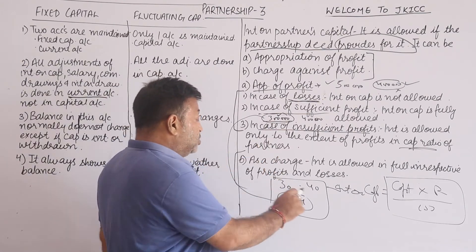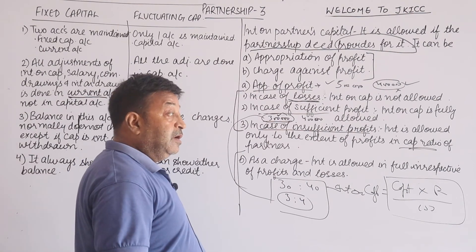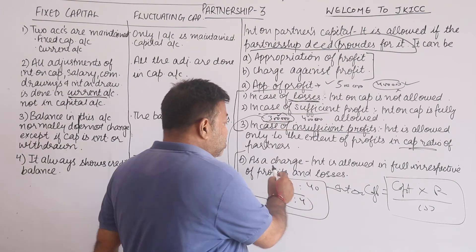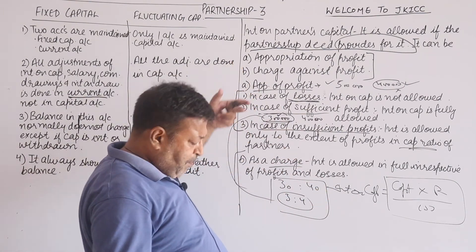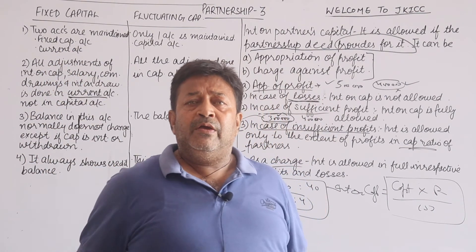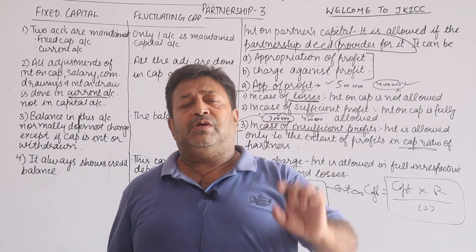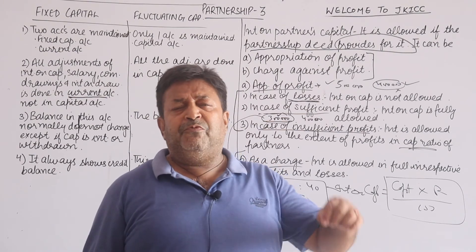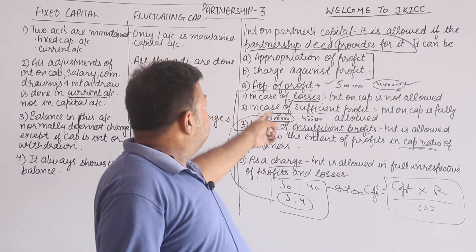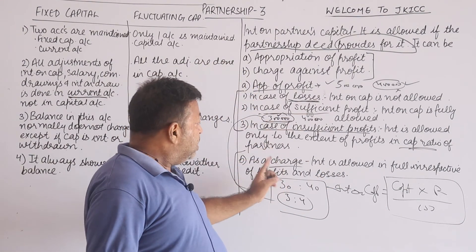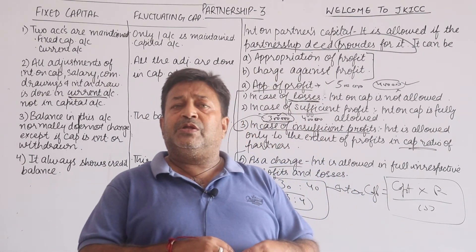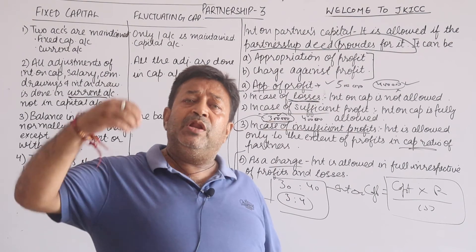Now, if it is written in the partnership deed that interest on capital is a charge against profit, then we do not apply those provisions. If it is a charge, we have to give interest on capital even if there is a loss — whether there are more profits or fewer profits or even a loss, interest on capital is fully allowed, irrespective of the level of profits or losses.